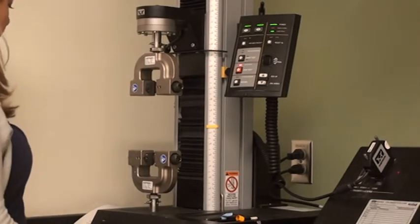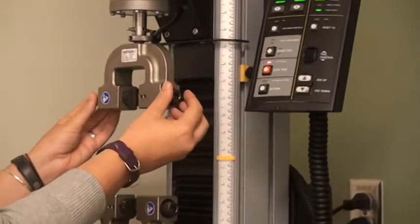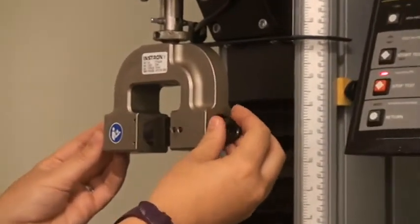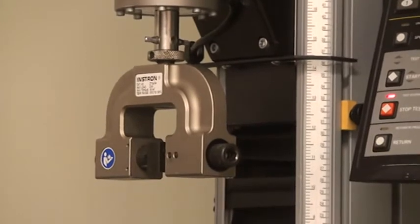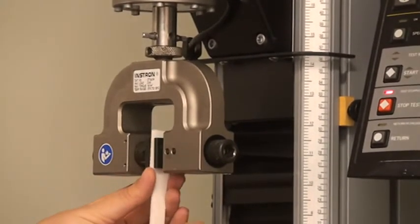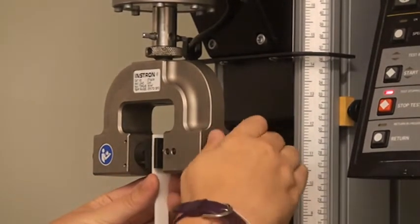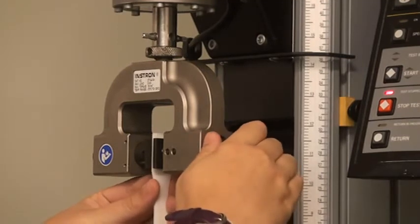Starting with the upper grip, use the screw knobs on the side of the grip to separate the jaw faces until they are a little bit further apart than the thickness of your sample. Insert your sample into just the upper grip and tighten the screw knobs to grip your sample.